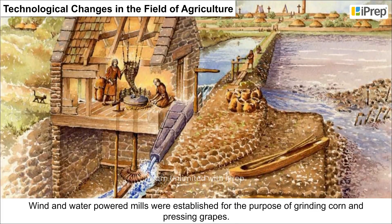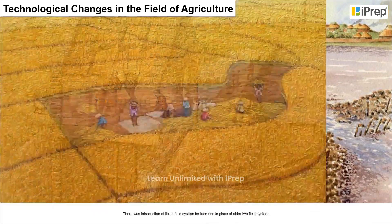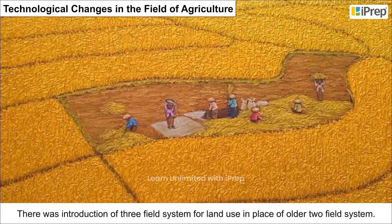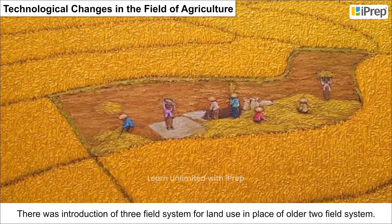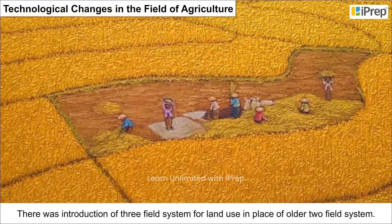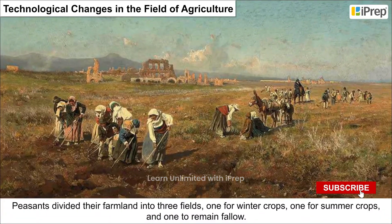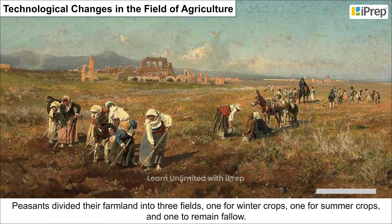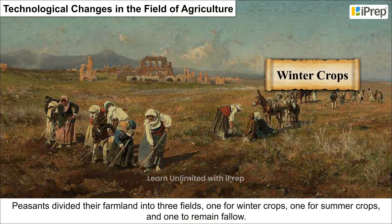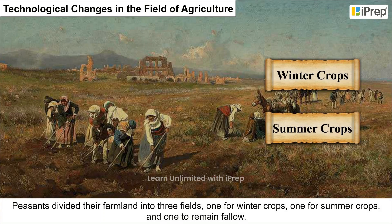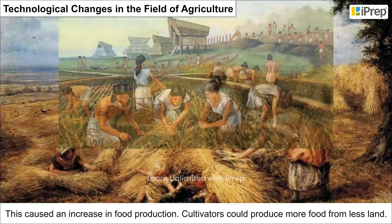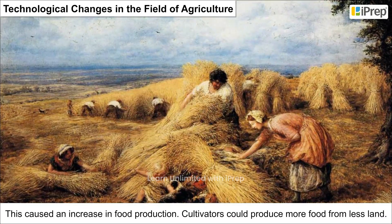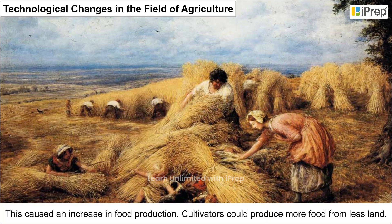There was an introduction of the three-field system for land use in place of the older two-field system. Peasants divided their farmland into three fields — one for winter crops, one for summer crops, and one to remain fallow. This caused an increase in food production; cultivators could produce more food from less land.